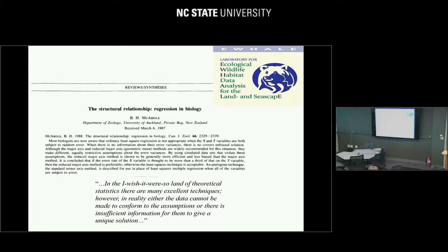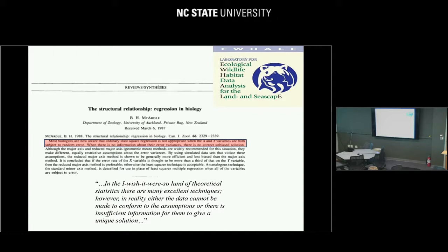Here is somebody who said it much earlier — Meg Ardal from New Zealand, published in the Canadian Journal in 1989. In the abstract it says: most biologists are fully aware that ordinary least squares regression is not appropriate when x and y variables are both subject to random error. In nature, we have these types of errors. In the 'I-wish-it-were-so land of theoretical statistics' there are many excellent techniques. However, in reality, either the data cannot be made to conform to the assumption, or there's insufficient information for them to give a unique solution. This means basically this tool you cannot use in real life applications.